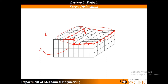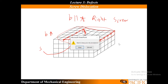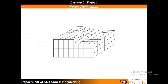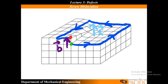So you can see my Burgers vector here is going up from my start to my finish. My Burgers vector is parallel to my tangent vector. So what type of defect is that? This is a right-hand screw dislocation. And you can kind of see that same process illustrated here.